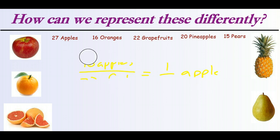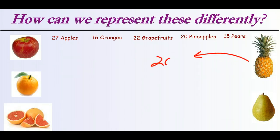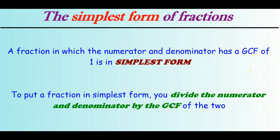We have 27 out of 100 — can we find an easier, simpler way of representing, say, our 20 pineapples? 20 out of 100. We can find simpler ways of doing that, because every fraction has what's called a simplest form. The simplest form of a fraction is just the case where the numerator and denominator have a GCF of 1 — that is, they share no factors except for 1. To put the fraction in simplest form, you just have to divide both numerator and denominator by the GCF of the two. Go ahead, pause the video, write down these two definitions — one of the simplest form, and the process for finding it — and then come back.